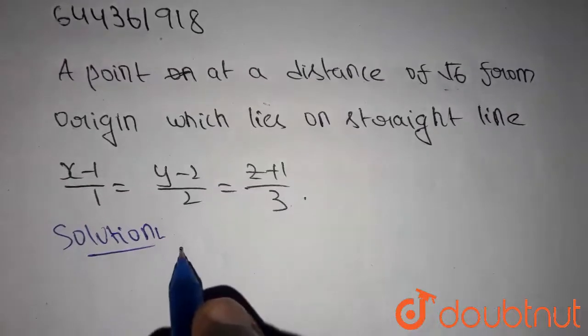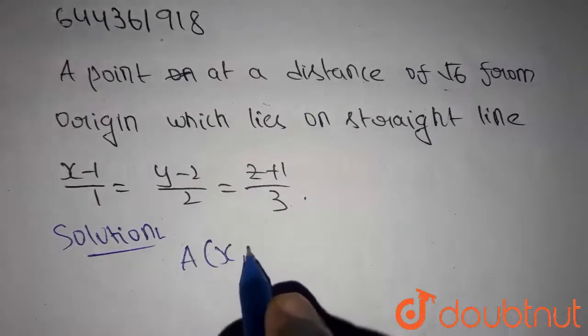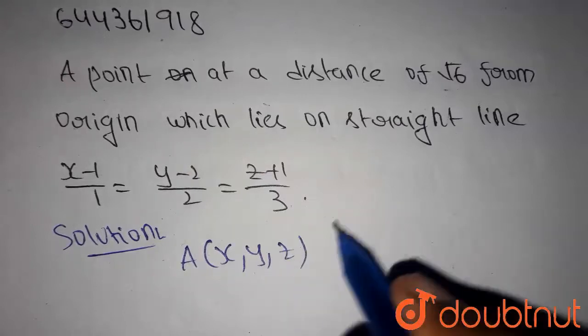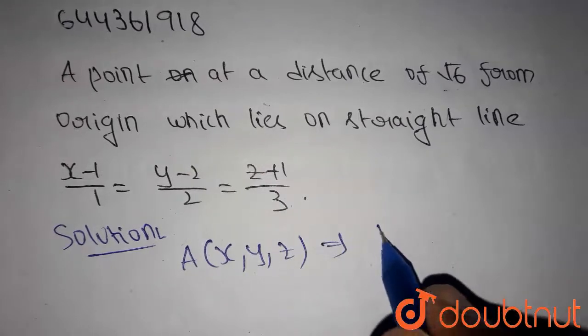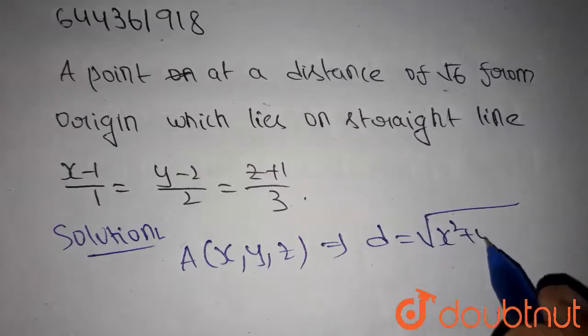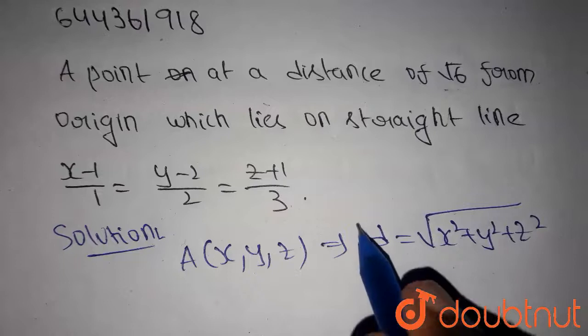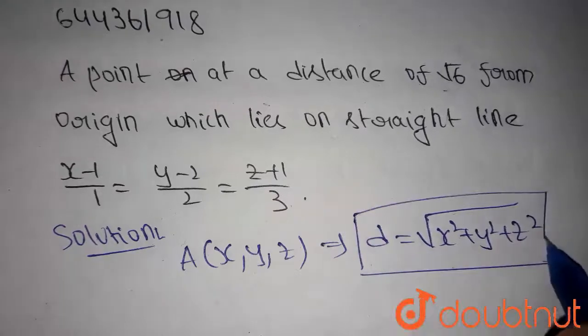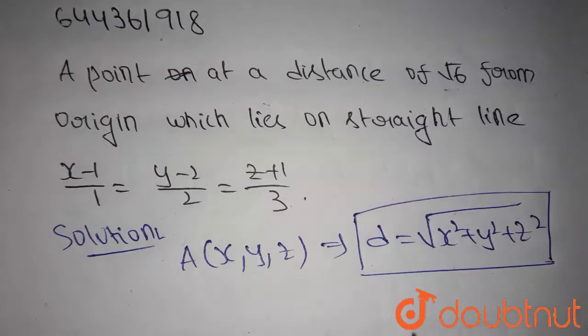Let's say there is a point called A(x, y, z). Then its distance from origin is given by root over x square plus y square plus z square. Remember this one, we are going to use this formula in the later steps.